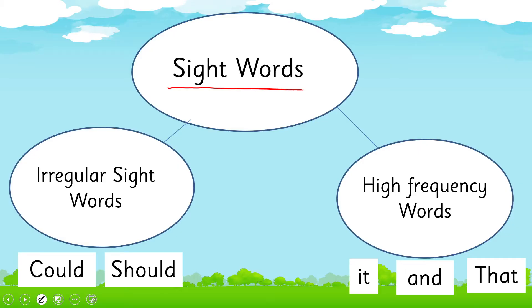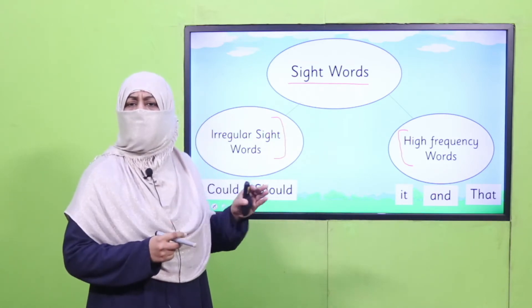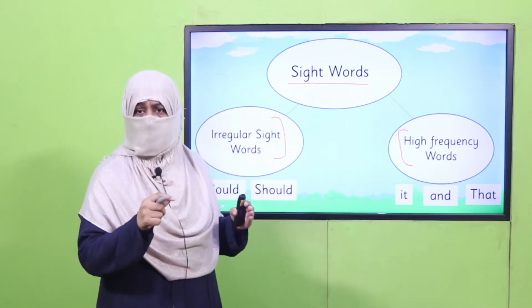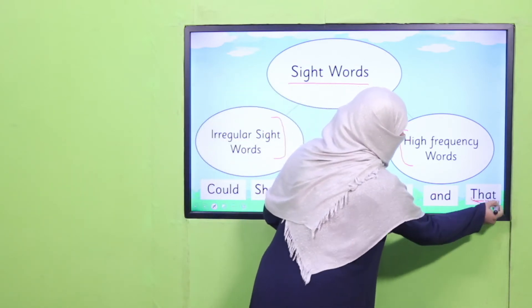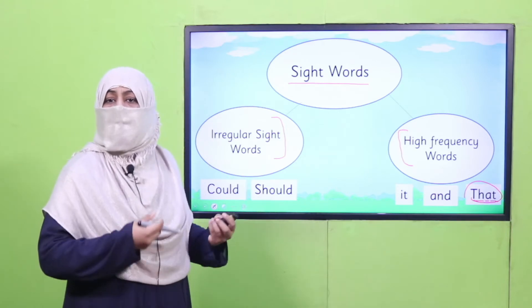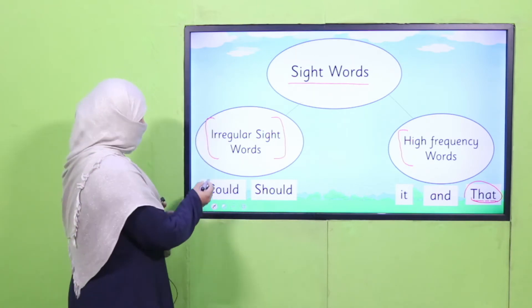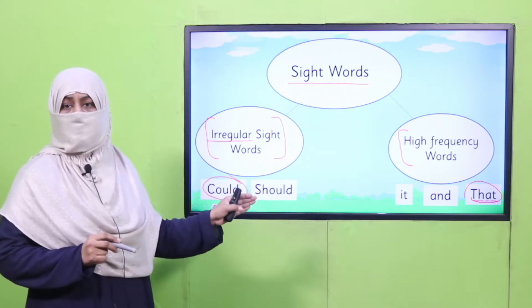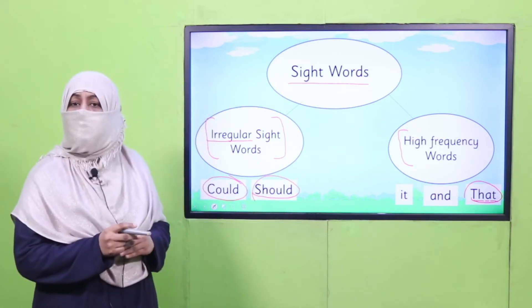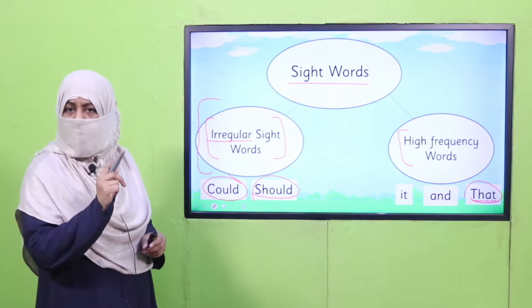Irregular sight words are a part of sight words. We divide sight words into two categories: high frequency words and irregular sight words. High frequency words are those we often read in our content — because we read them again and again, we quickly recognize them. For example, 'the,' 'a,' 'to.' But for irregular sight words, though they may also appear regularly, their pattern is irregular. For example, 'could' and 'should' cannot be broken down through regular spellings. That's why we call them irregular sight words.